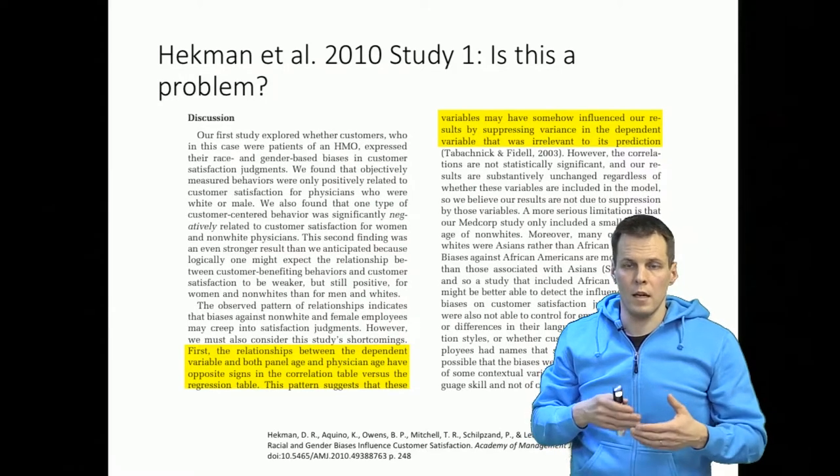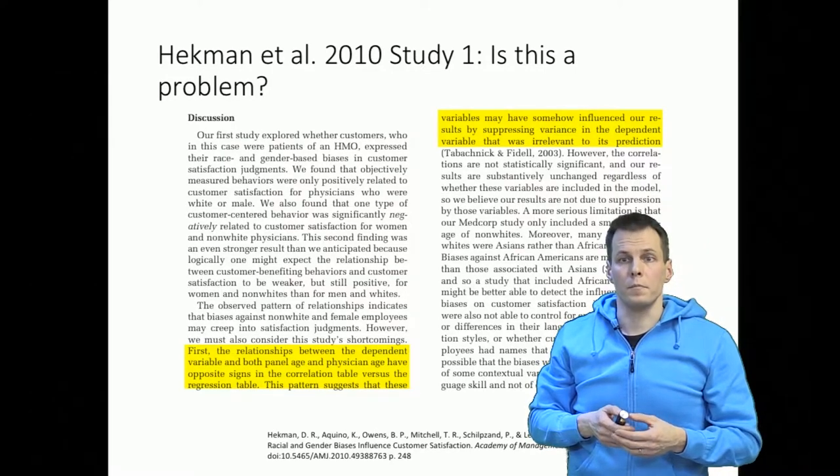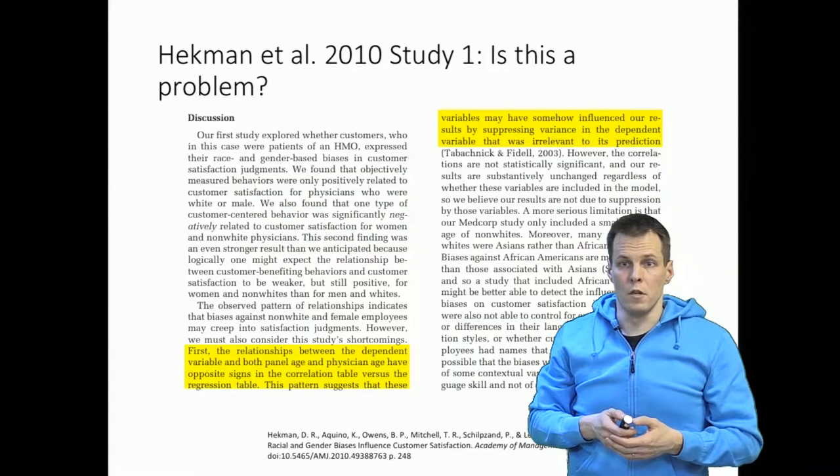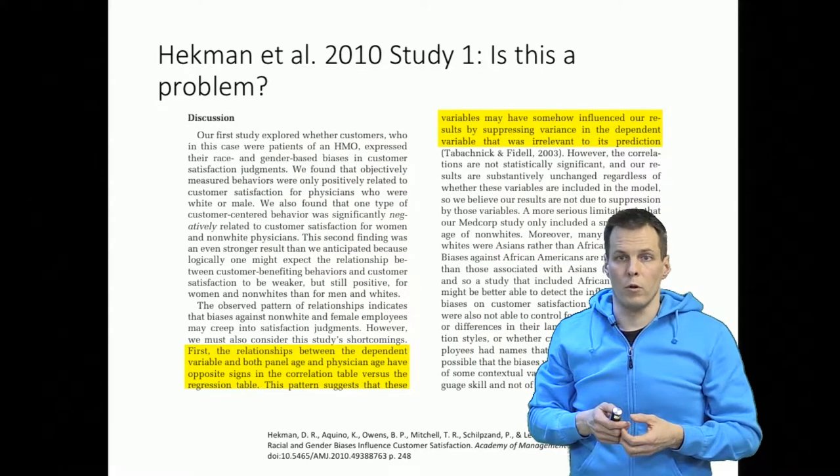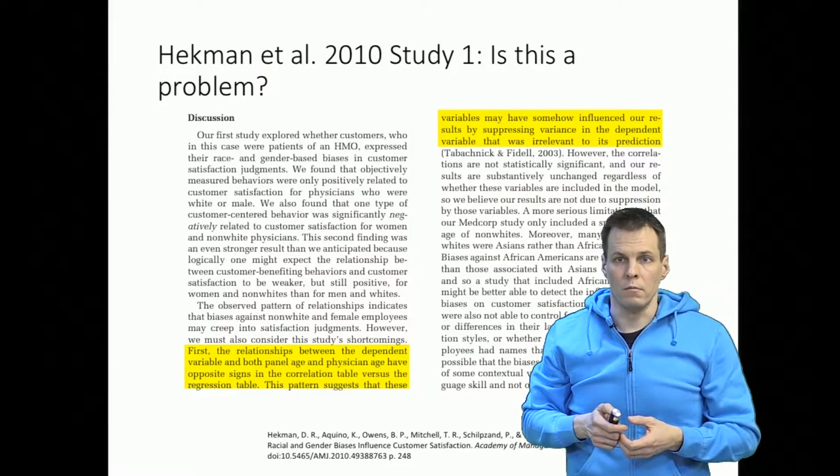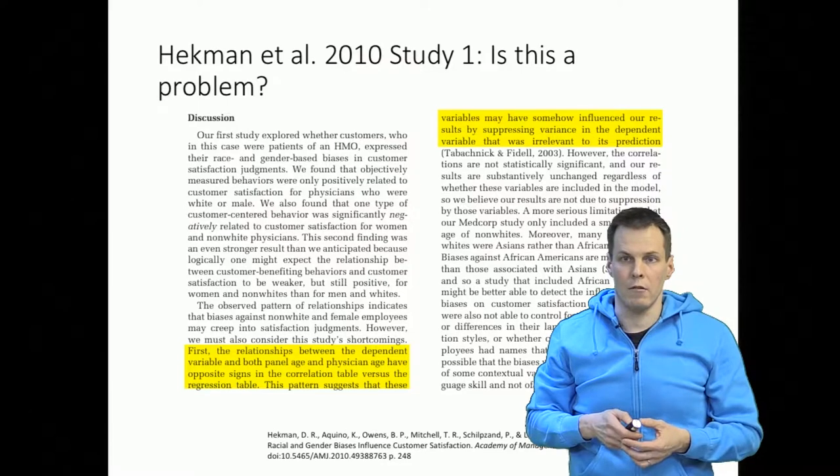The technical definition is unimportant here. Then they explain that these variables may somehow be suppressing the variance of the dependent variable that is irrelevant to its prediction. I don't understand what that means, so that doesn't really have any literal meaning.